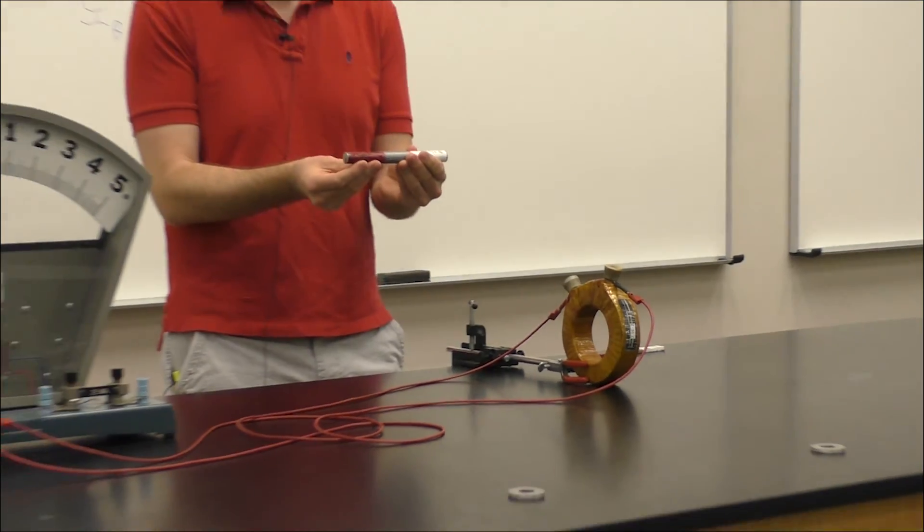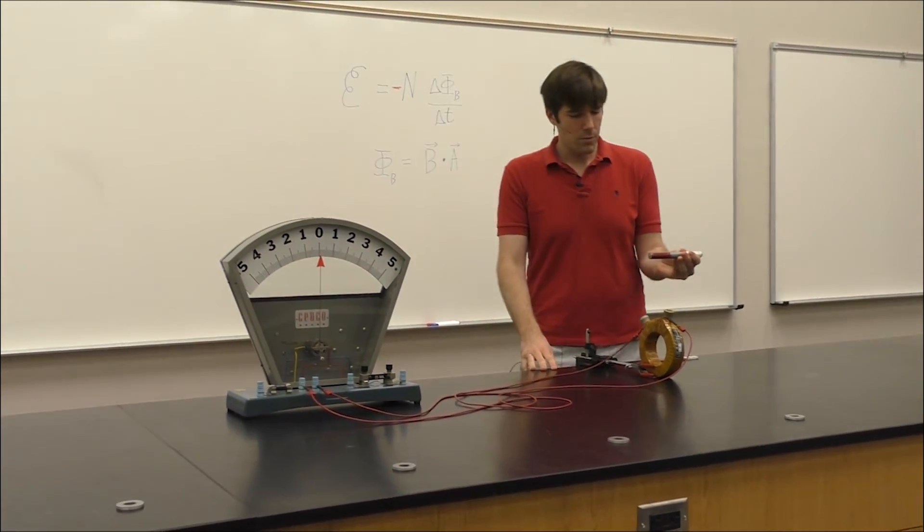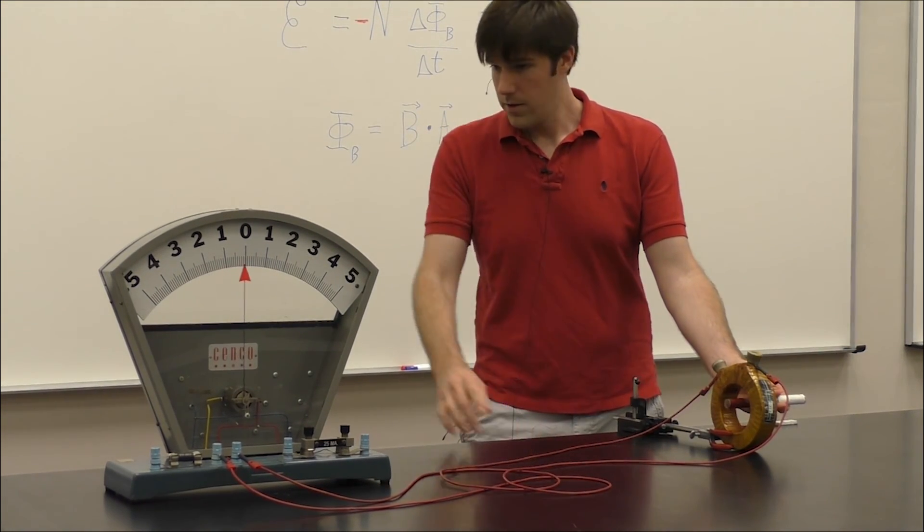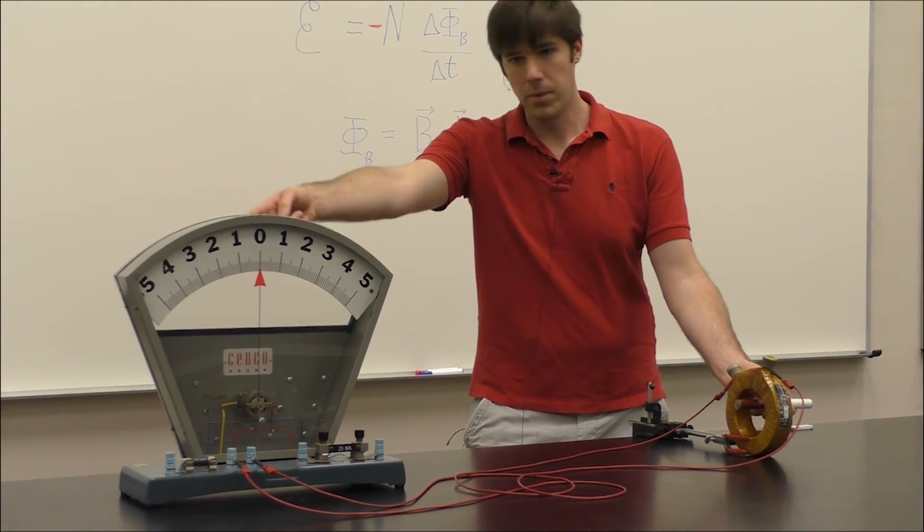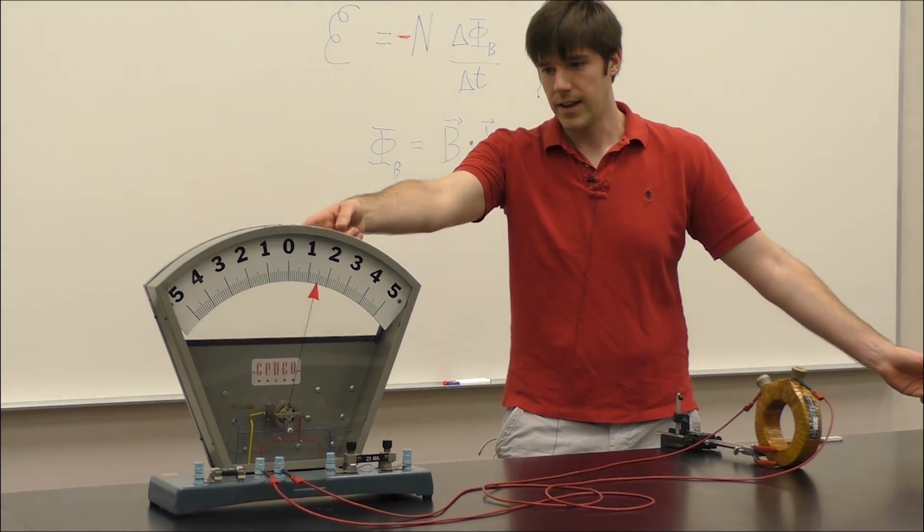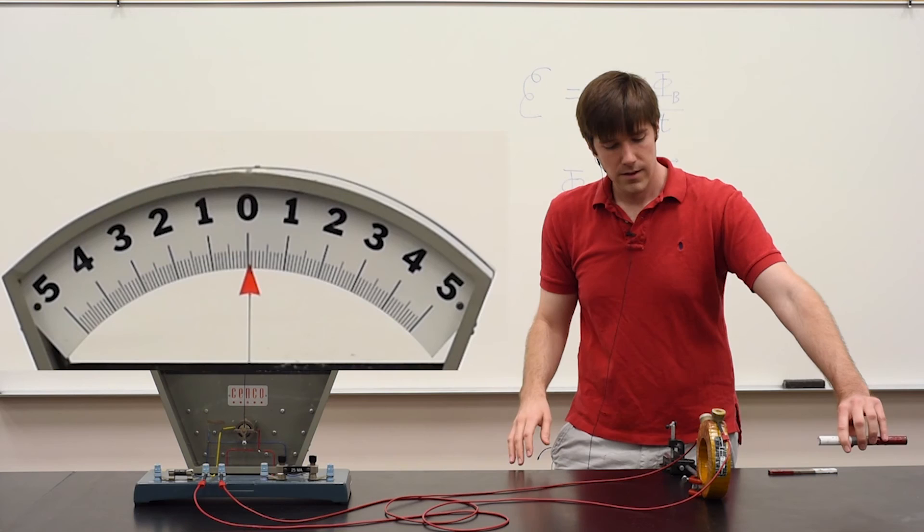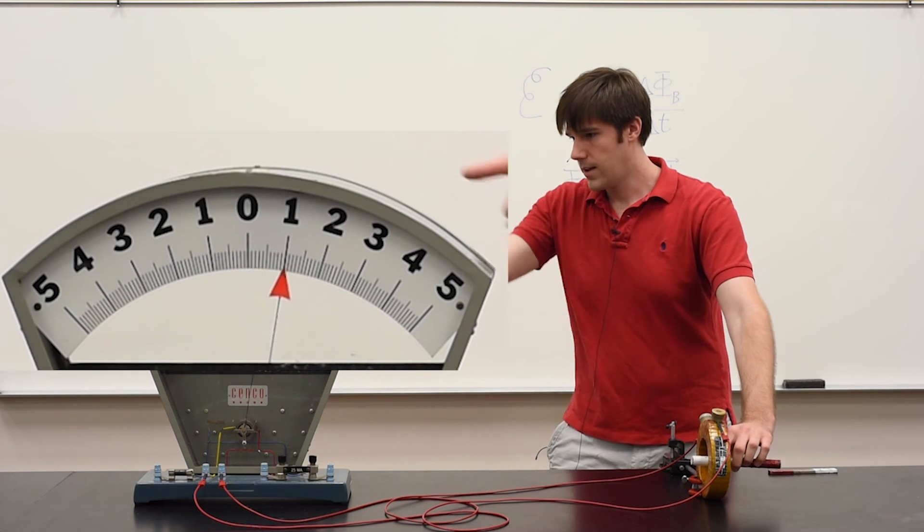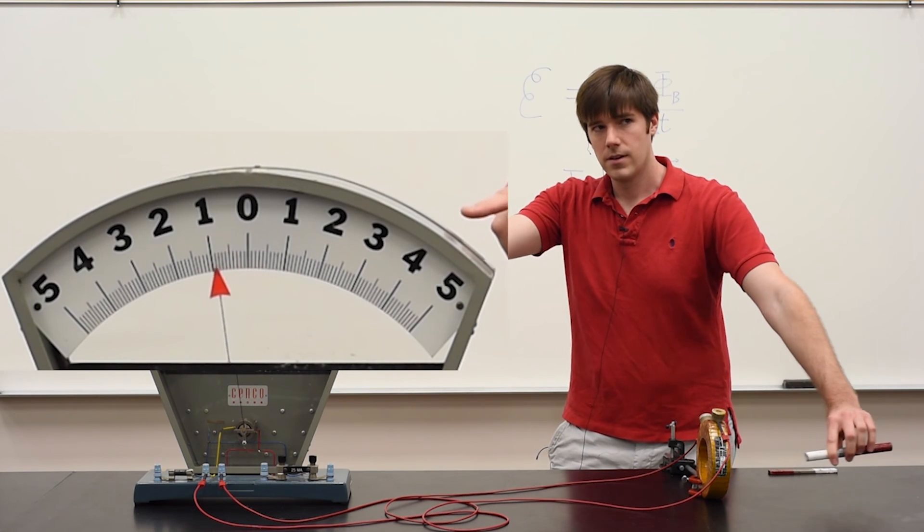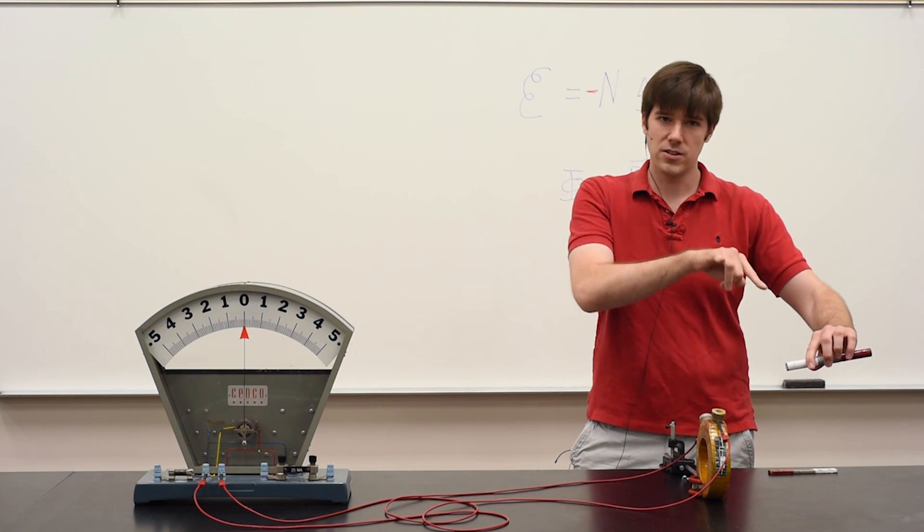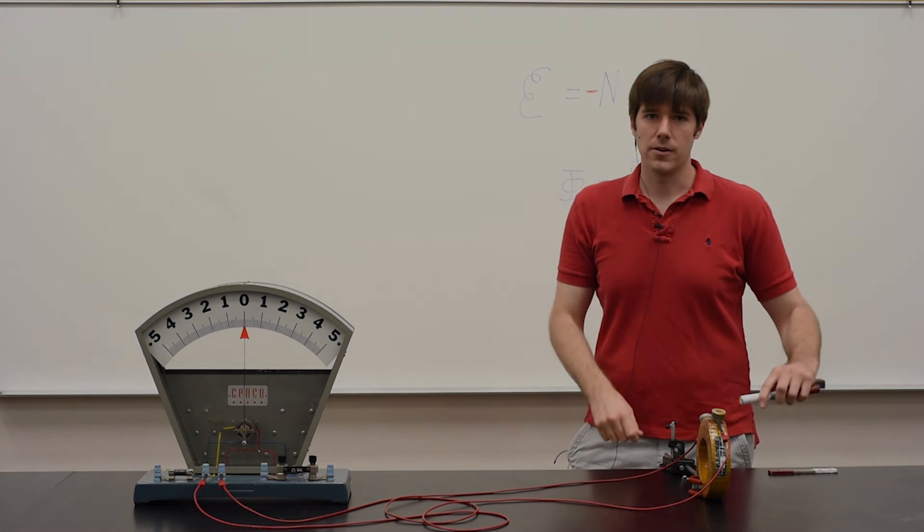You can also demonstrate this by changing the poles. When I do the north pole through those coils, it goes to the positive direction. And when I take it out, it goes to the negative. Now, if I switch the poles to the south side, it does the exact opposite because the voltage is being set up to oppose the magnetic flux. If I change the pole directions, it sets up the voltage in the opposite manner.